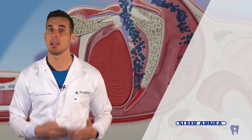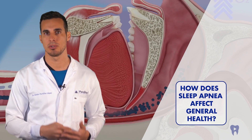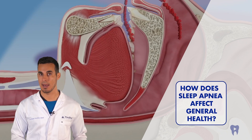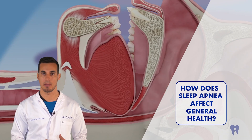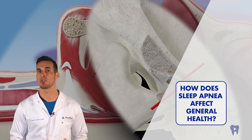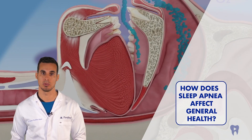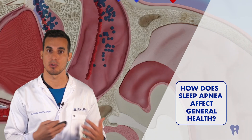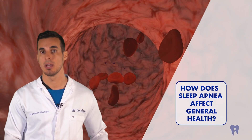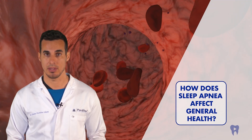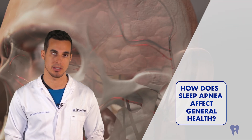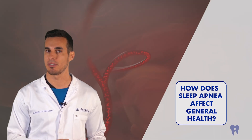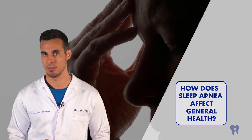Obstructive sleep apnea is a disorder in which breathing is repeatedly interrupted during sleep due to airway obstructions. An improper bite or poor jaw alignment can contribute to sleep apnea. For example, a backward jaw can push the tongue towards the back of the throat, blocking the airway during sleep. Untreated sleep apnea can have numerous health consequences, including an increased risk of hypertension, cardiovascular disease, type 2 diabetes, and mental health problems such as depression and anxiety. Additionally, chronic fatigue resulting from disrupted sleep can affect quality of life, concentration, and performance in daily activities.